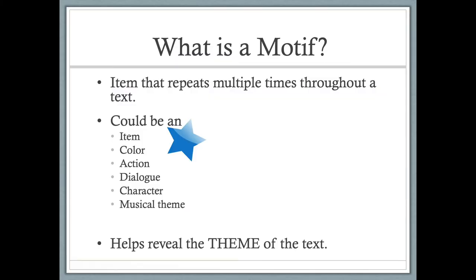Just like in literature, a motif is an item that repeats multiple times throughout a text. A motif could be an item — a physical thing — it could be a color, an action, dialogue, a character, or even a musical theme heard throughout the score.